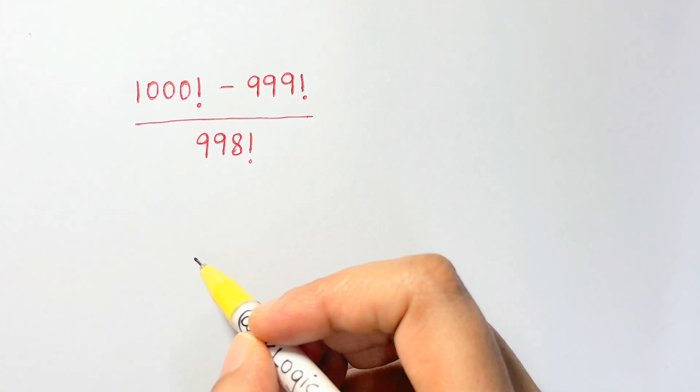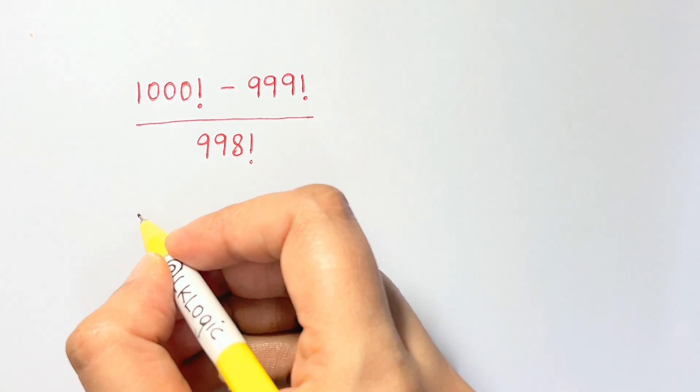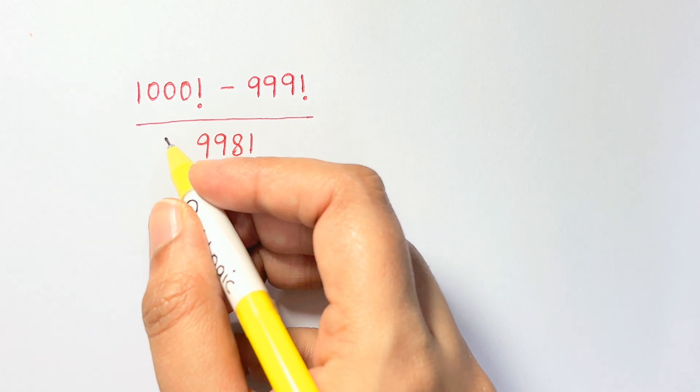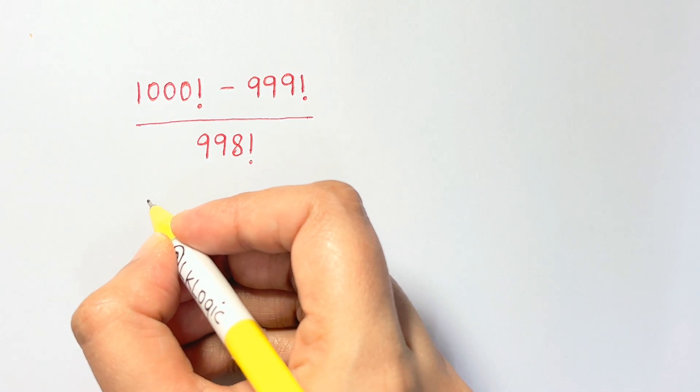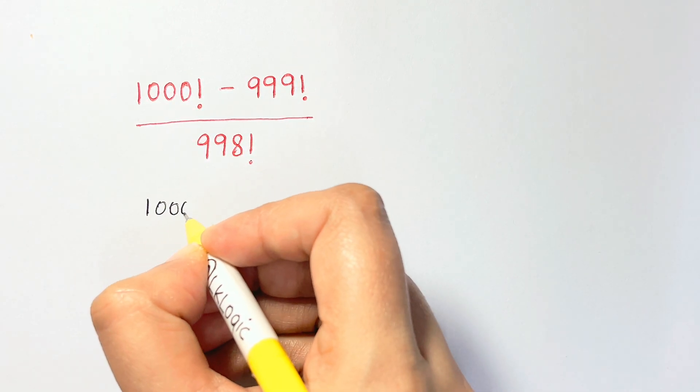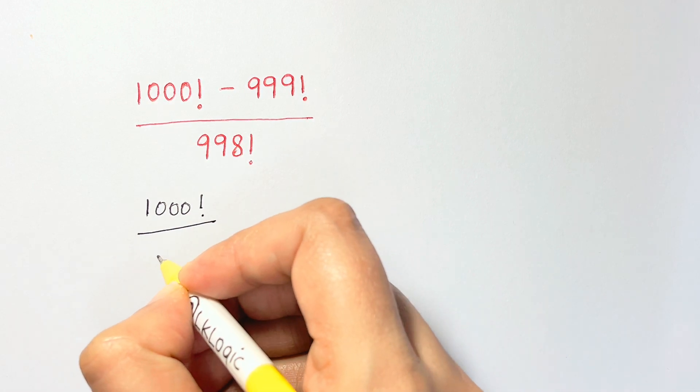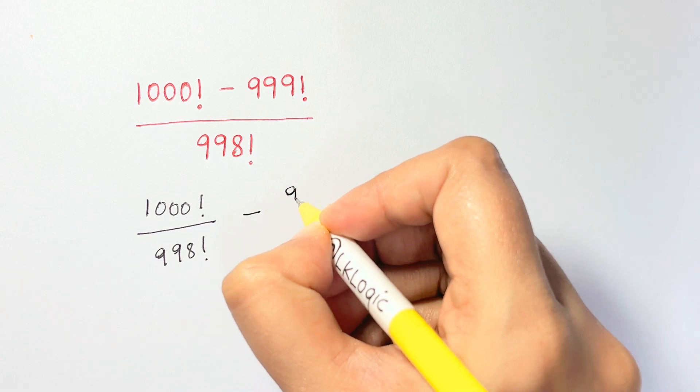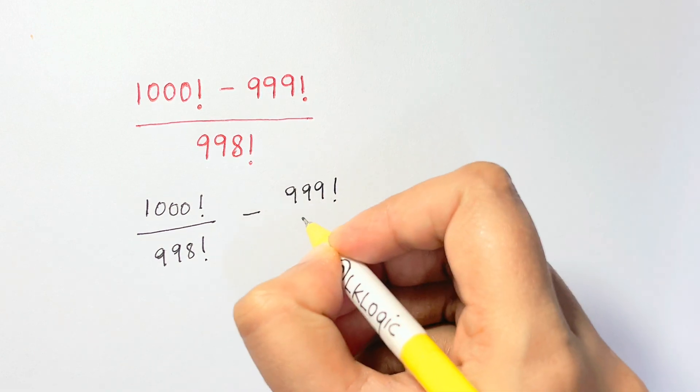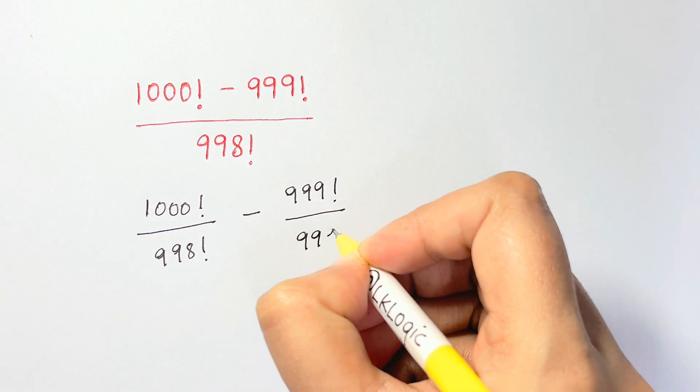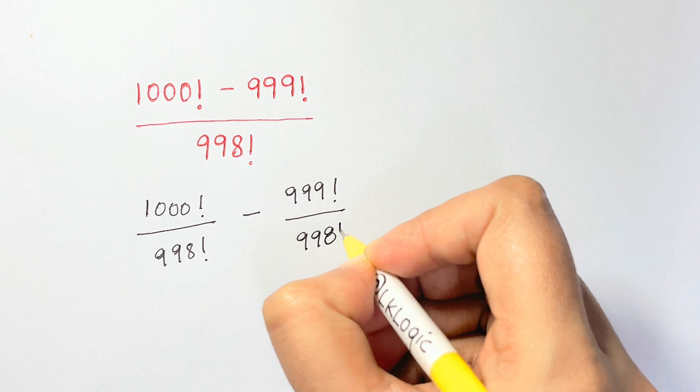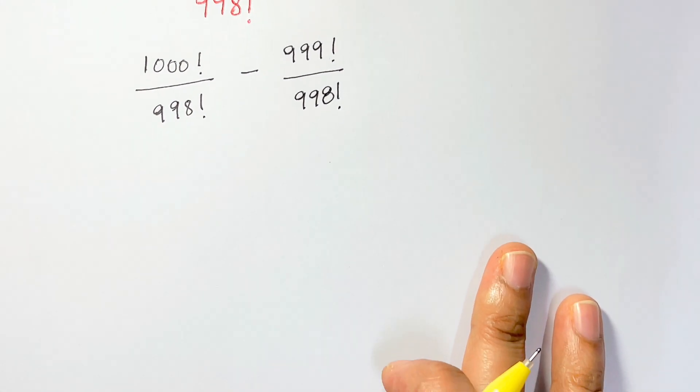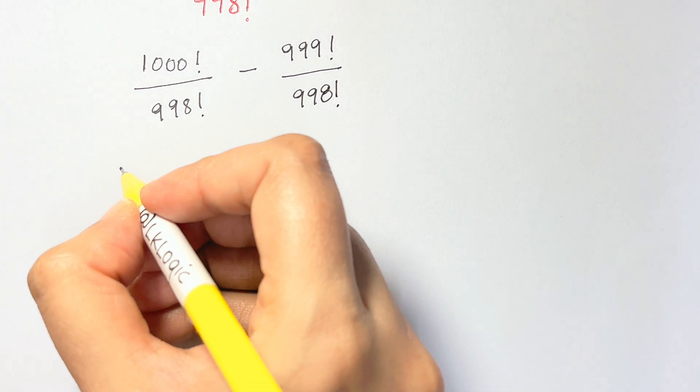Hi guys, let's solve this factorial problem: 1000 factorial. We'll split them and write it like this: 1000 factorial over 998 factorial minus 999 factorial over 998 factorial.